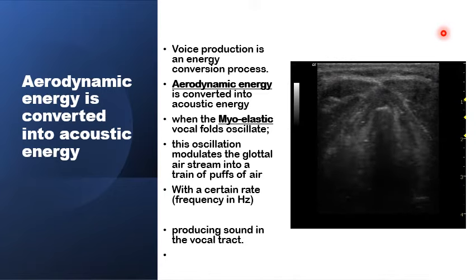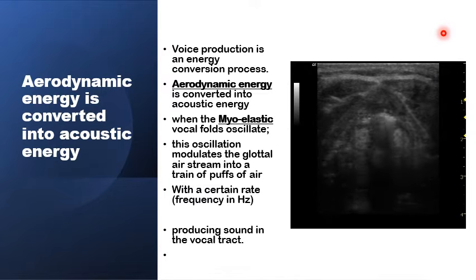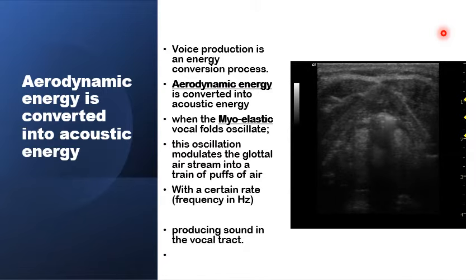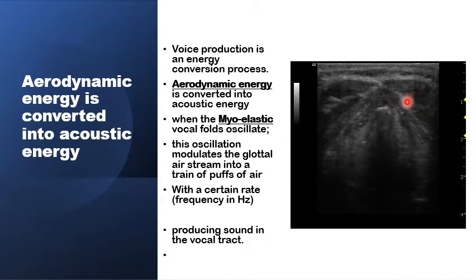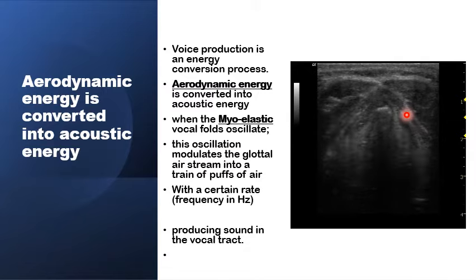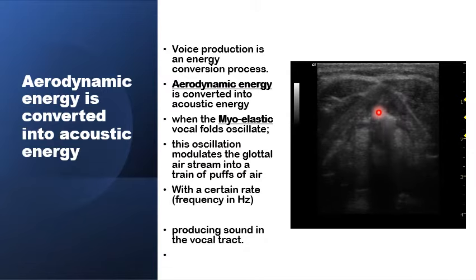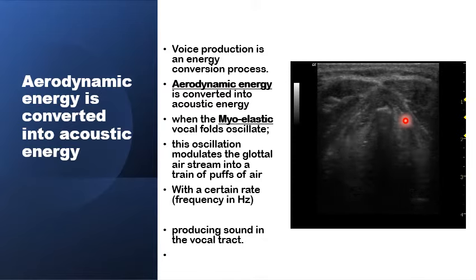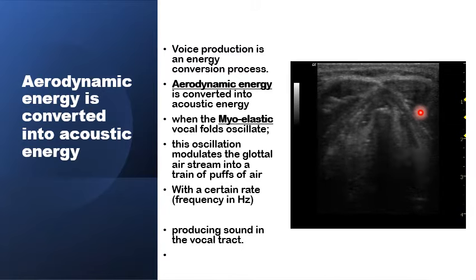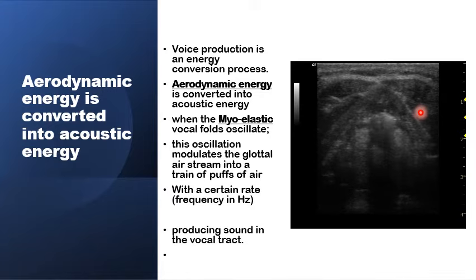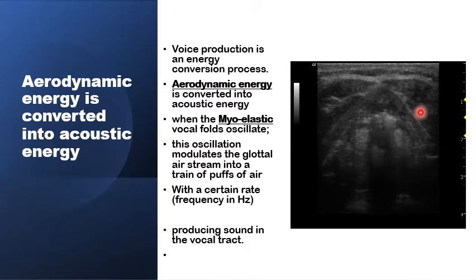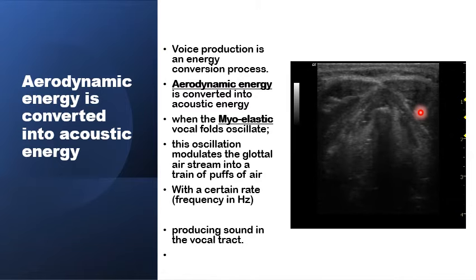Voice production is essentially an energy conversion process in which the aerodynamic energy supplied by the pressure of the air driven out of the lungs is converted at the glottic level into acoustic energy by the myoelasticity of the vocal fold tissues. This myoelasticity drives the oscillation of the vocal folds, which modulates the continuous air stream into a train of air puffs at a certain rate — the fundamental frequency of the glottic signal — and this is the essential first part in voice production.